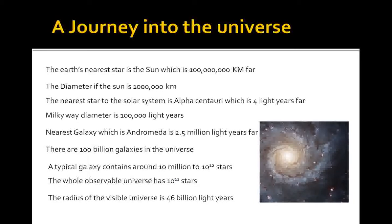While the nearest star to the solar system is Alpha Centauri, which is four light years far, and the Milky Way diameter is a hundred thousand light years. The nearest galaxy, which is Andromeda, is 2.5 million light years far, and there are hundred billions of galaxies in the universe. A typical galaxy contains around 10 million to 10 power 12 stars, and the whole observable universe has 10 to the 21 stars, and the radius of the visible universe is 46 billion light years.